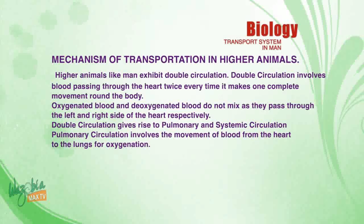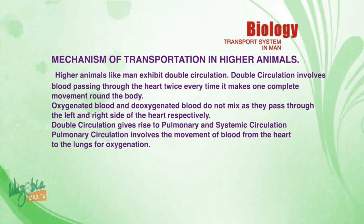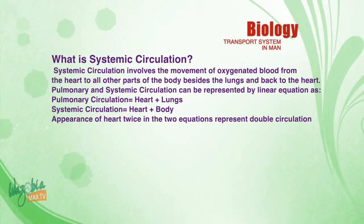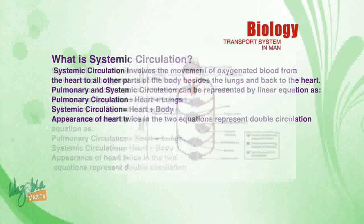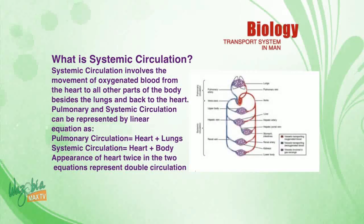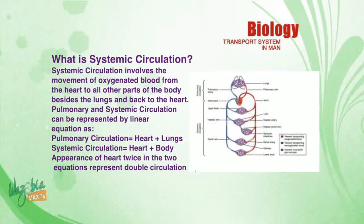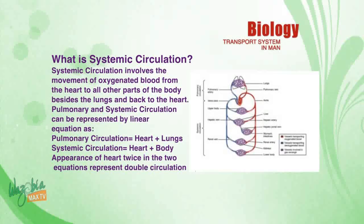Double circulation gives rise to pulmonary and systemic circulation. Pulmonary circulation involves the movement of blood from the heart to the lungs for oxygenation. Systemic circulation involves the movement of oxygenated blood from the heart to all other parts of the body besides the lungs, and back to the heart. These can be represented as: pulmonary circulation = H + lungs; systemic circulation = H + body. The appearance of H twice represents double circulation.